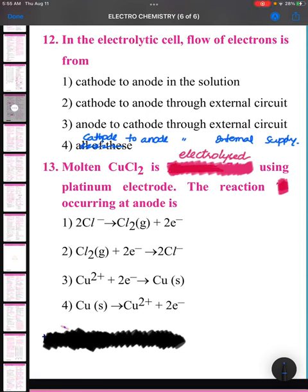In the electrolytic cell, flow of electrons is from - this is a controversy question actually.